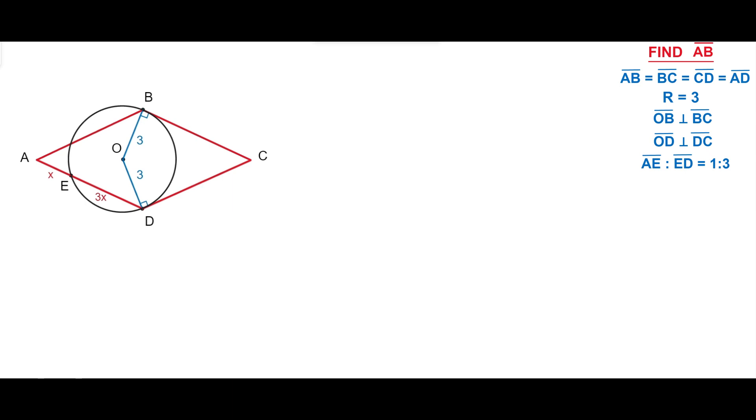According to the initial terms the ratio between the segments AE and ED is 1 to 3. So we have labeled the segment AE as X and the segment ED as 3X. All we need to do is find the value of X and multiplying by 4 we can get the answer.